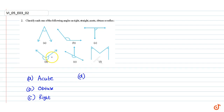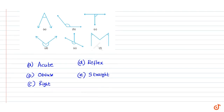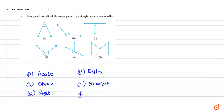Angle D: since the angle measures greater than 180 degrees but less than 360 degrees, it is reflex. Angle E: since the angle measures 180 degrees, it is straight. Angle F: since the angle measures less than 90 degrees, it is acute. These are our answers.